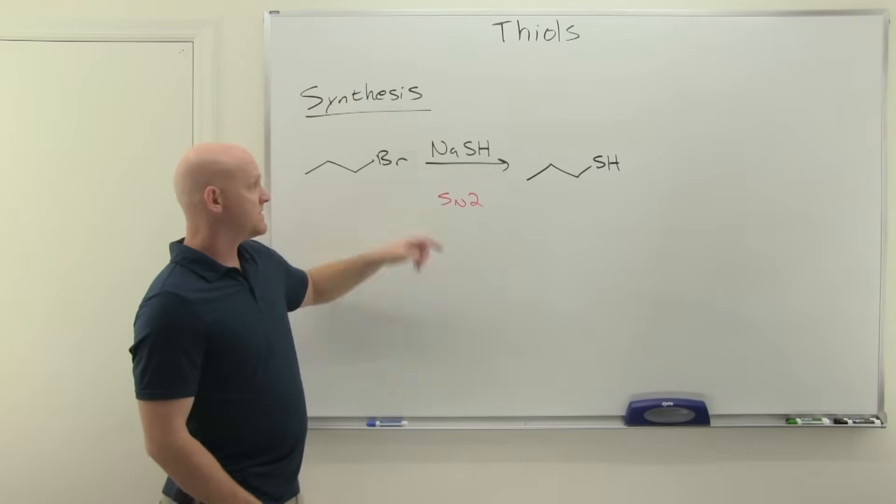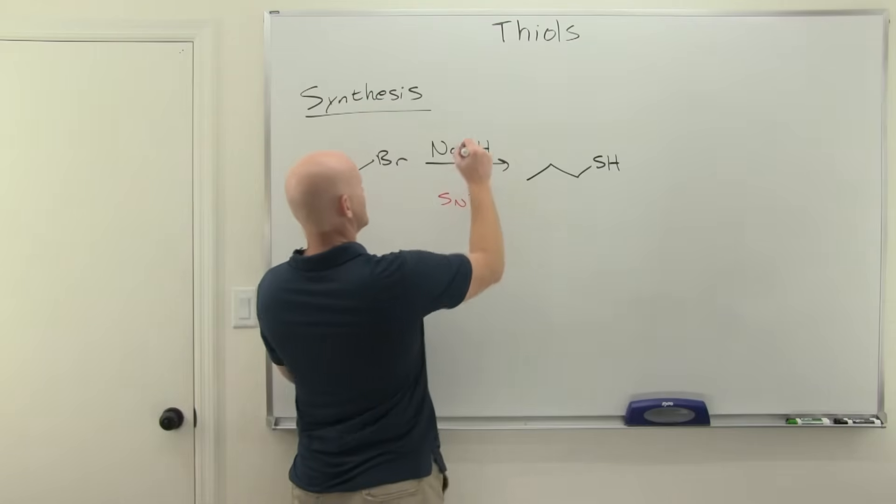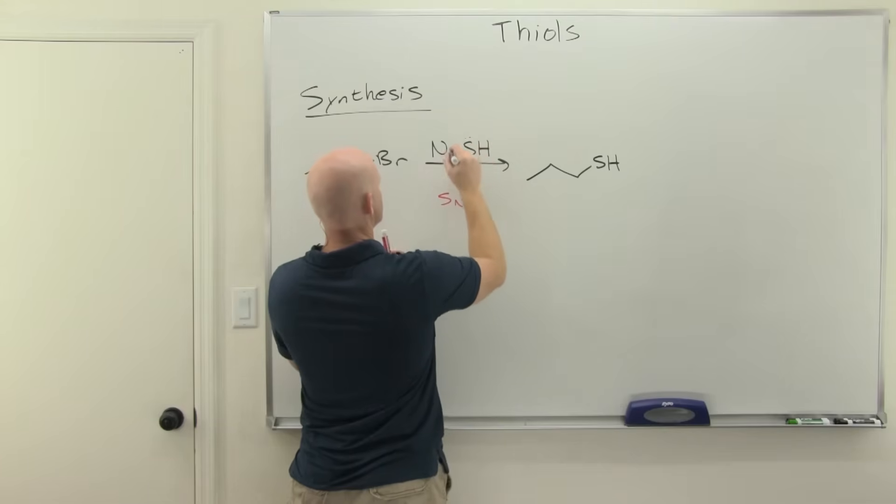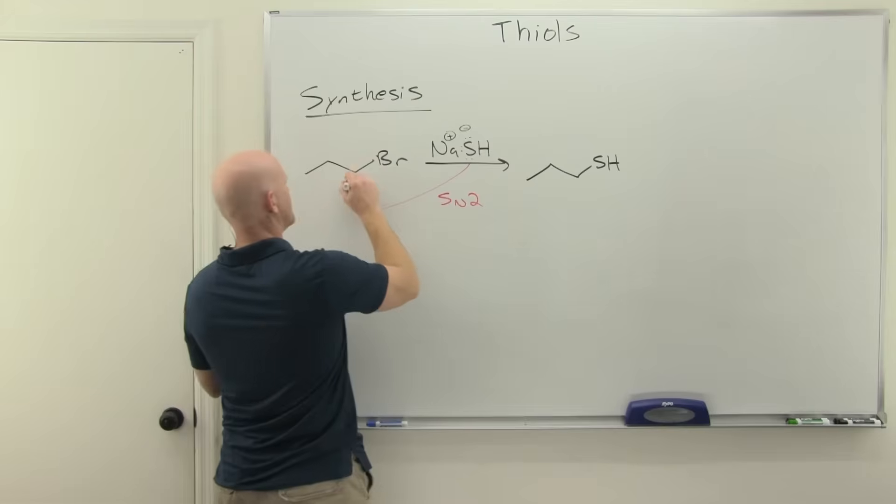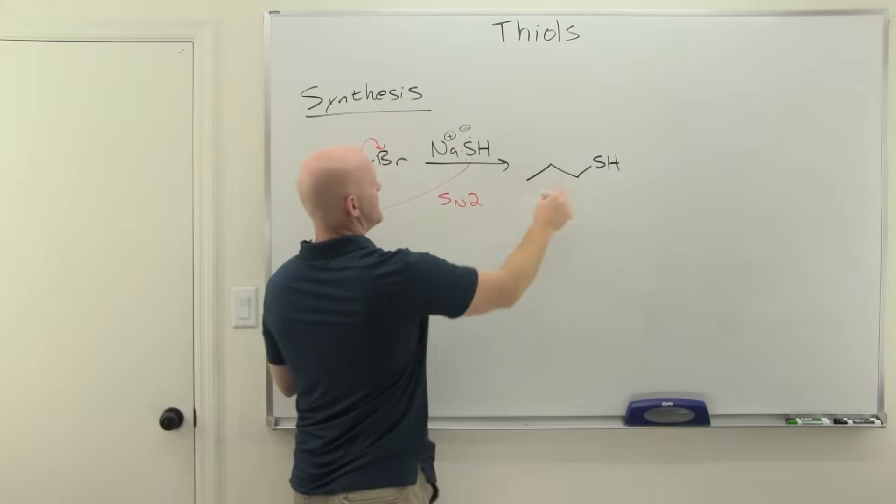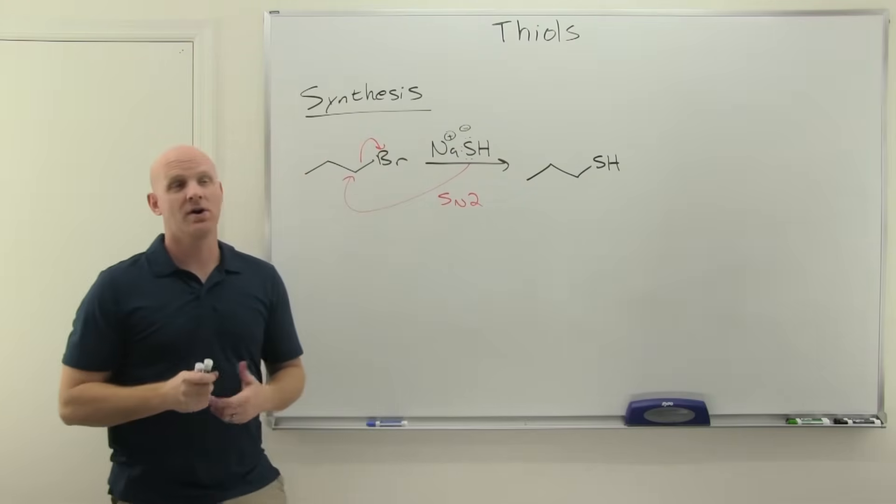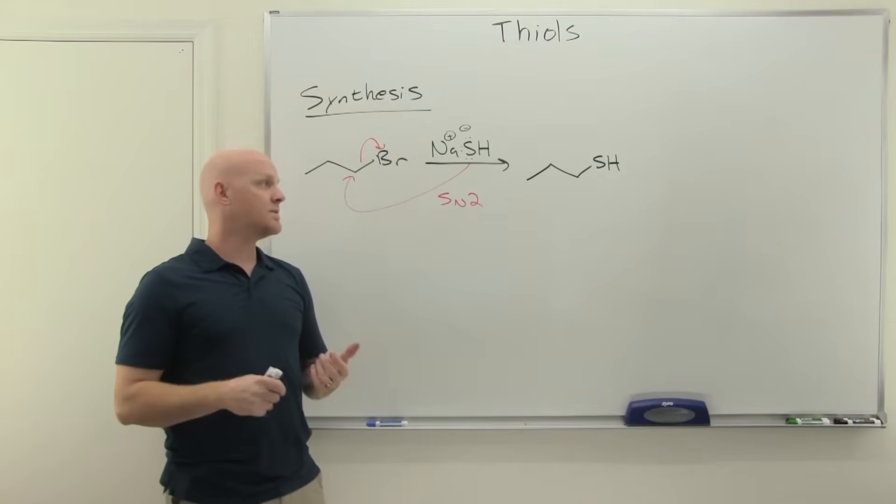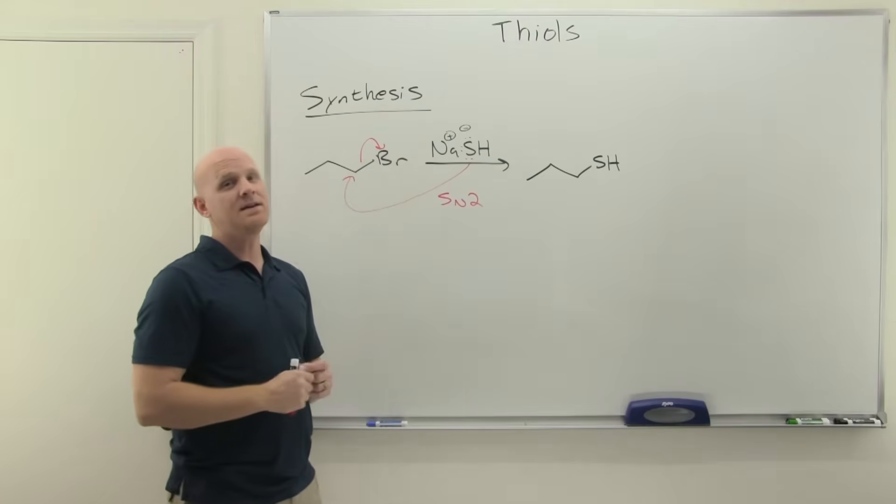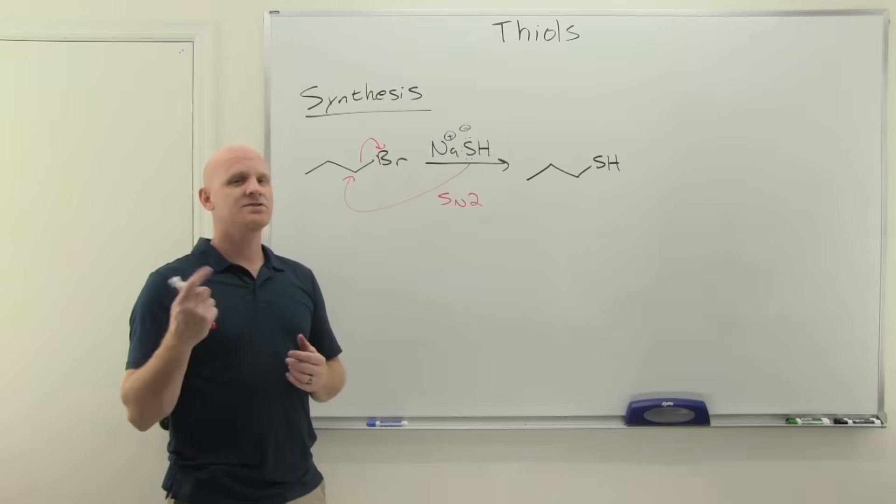Straight up SN2—we're just going to be doing backside attack here, nothing fancy, nothing new. Backside attack, kick off the leaving group, and we have now formed a thiol. This is really the only way we're going to discuss forming a thiol, which makes it easy. Let's look at the one reaction of thiols.